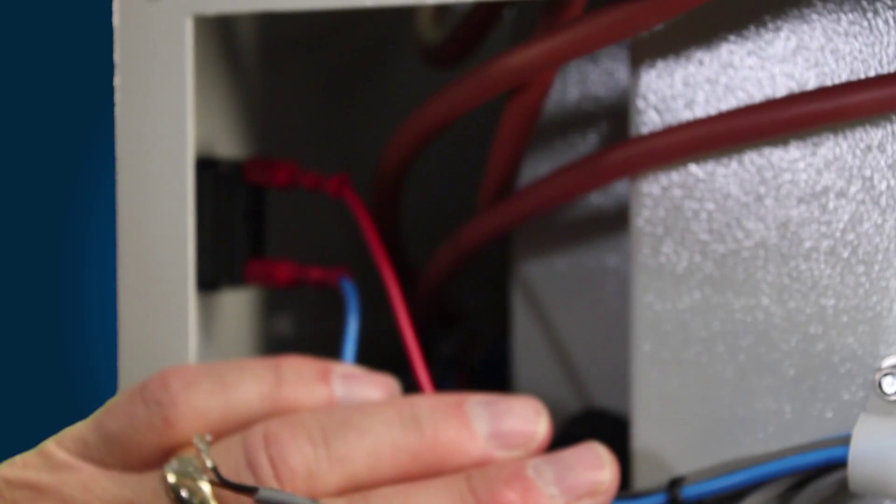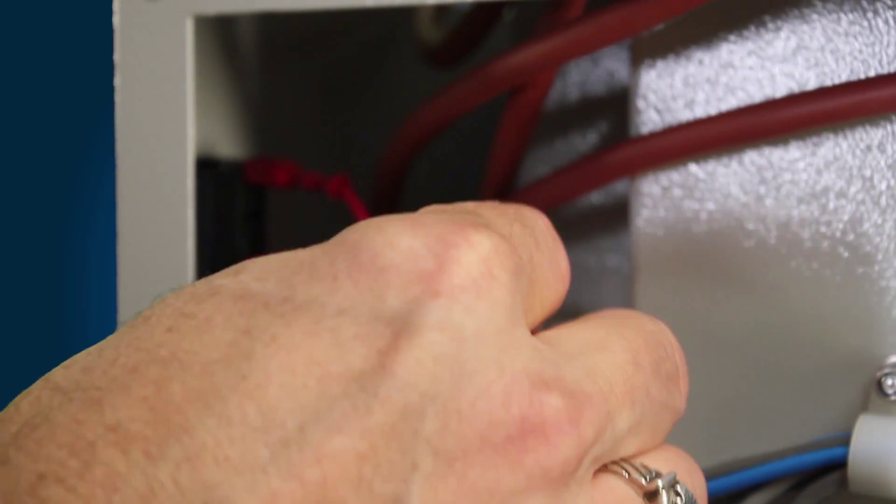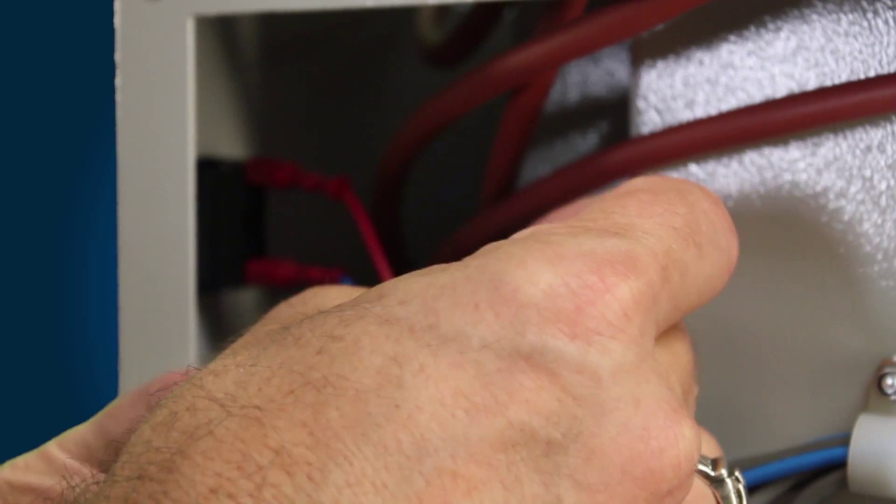Now that we have the new thermistor routed through the grommet, we're going to route this new thermistor over in this location so we get back to the printed circuit board to connect it up to J2 and that connector that's in the circuit board.